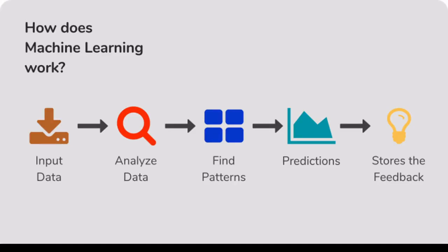The output is: this is a rabbit. When you use the prediction, the accuracy of the result starts at 0%. But when you use the machine learning model with more training, the accuracy can reach 78% or 80%. You can store the result and use a feedback system to confirm that the output is correct.